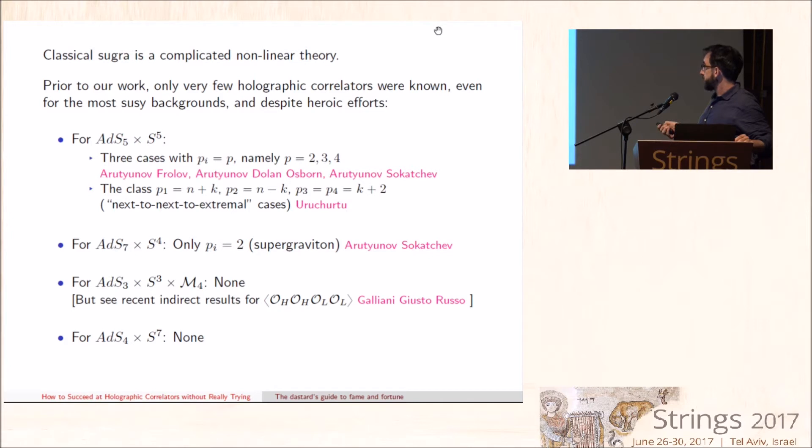Only the supergraviton four-point function has been computed for AdS7×S4. Essentially, nothing has been done for AdS3 and nothing at all for AdS4. And believe me, this is not for lack of trying. This sorry state of affairs should be contrasted with the beautiful progress that has been accomplished in the context of perturbative gauge theory amplitudes in flat space.